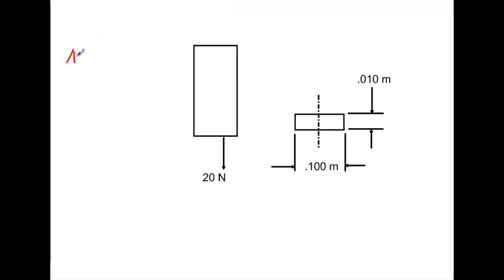So, our area would equal 0.010 times 0.1. We'll do that value real quick. And that's going to give us 0.01, sorry, 0.001 meters squared.